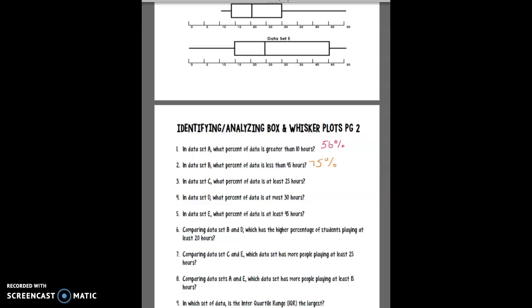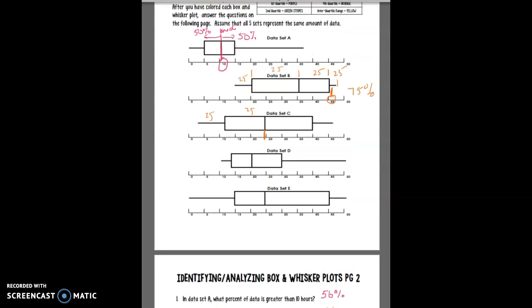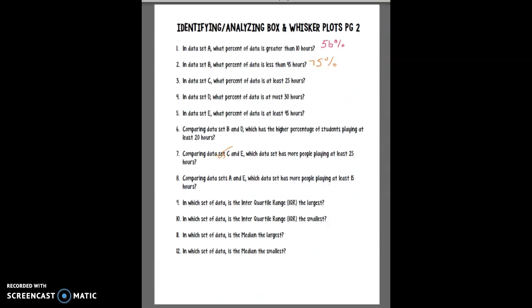Let's look at six. Comparing B and D which has the higher percentage of students playing at least 20 hours. B and D so 20 hours is here. So that's 25% and here 20 hours is here and that's going to be 50%. So you can tell which one is higher and you can answer that.